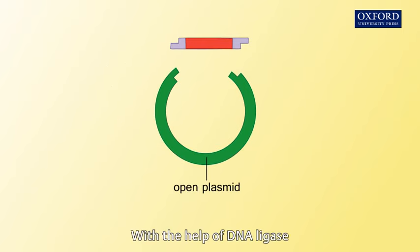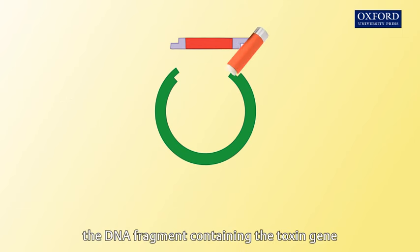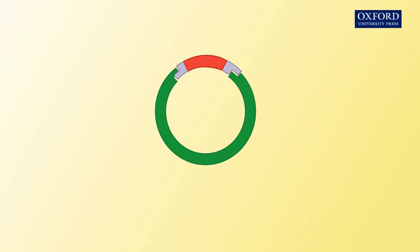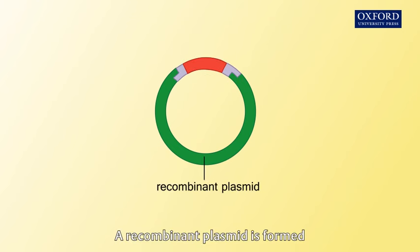With the help of DNA ligase, the DNA fragment containing the toxin gene is inserted into the open plasmid. A recombinant plasmid is formed.